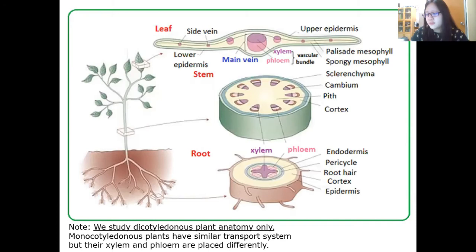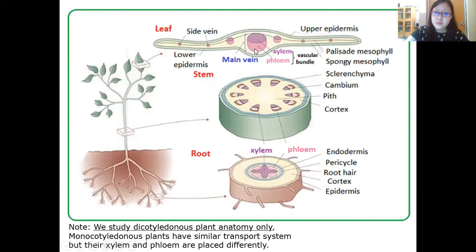There are three organs of the plant: leaves, a stem, and roots. Each part looks very different, and the most important structures are the xylem and phloem. Everything we learn here is about dicots only — dicotyledonous plant anatomy. Monocotyledonous plants have a similar transport system, but their xylem and phloem are placed slightly differently, so they will look different from these diagrams.